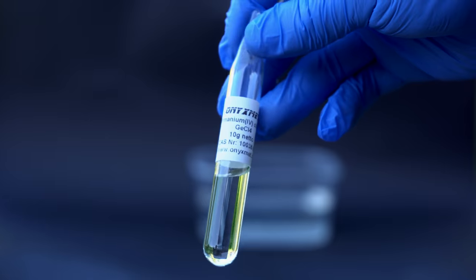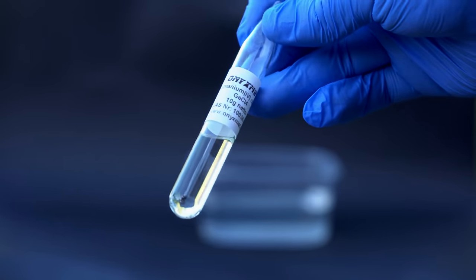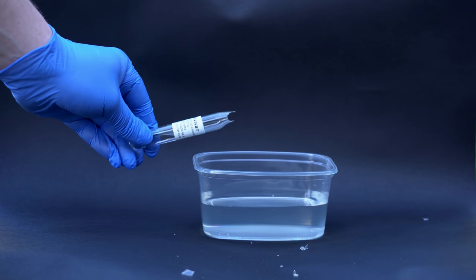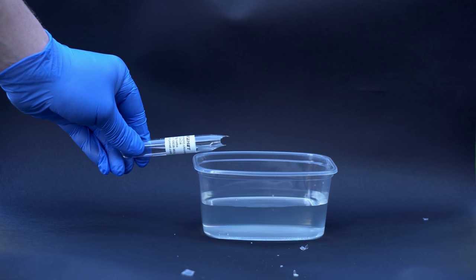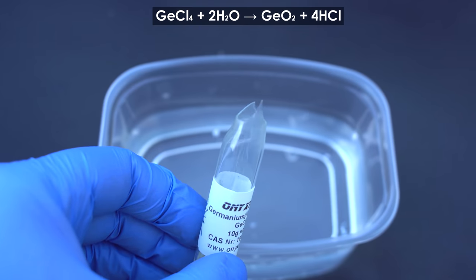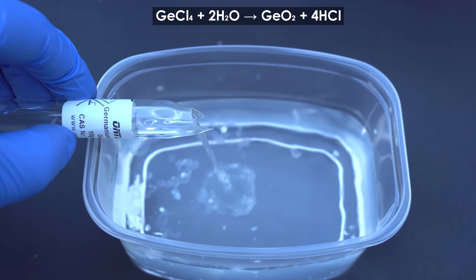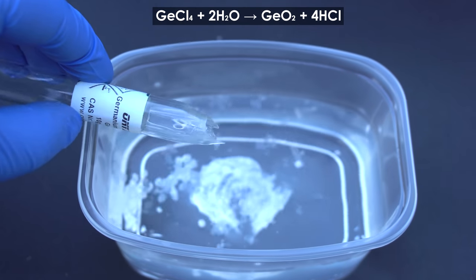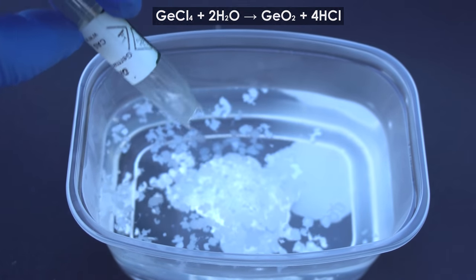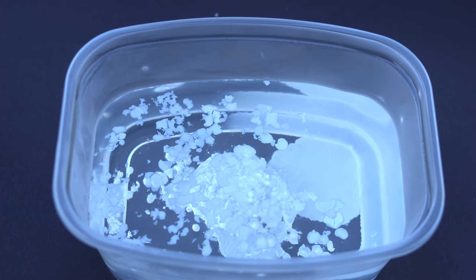One of the intermediate components in the production of this element is germanium tetrachloride, which is a colorless liquid. If you open such an ampoule with germanium tetrachloride, this chemical will immediately start reacting with moisture from the air, creating fume from hydrochloric acid and germanium dioxide. Nowadays, this chemical is used in the production of germanium of semi-conductive quality and also in the production of optical fiber.